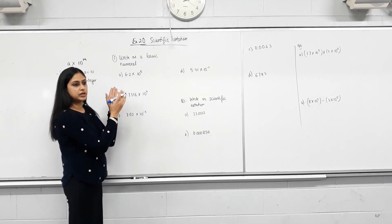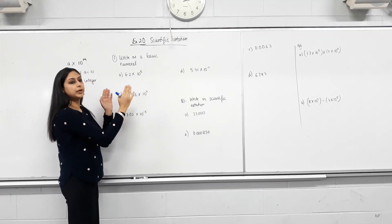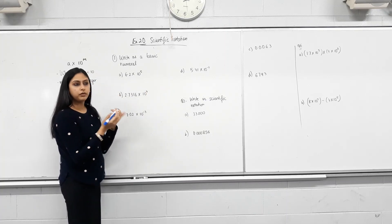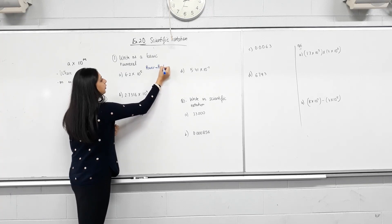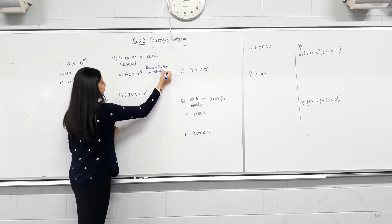Positive. Positive, right? That means we need to make this number bigger. Now there's two directions I can move the decimal, to the right or to the left. What would make the number bigger? Moving this decimal to the right or to the left? To the right. Right, exactly. So if the power is positive, you move decimal to the right. Does that make sense?